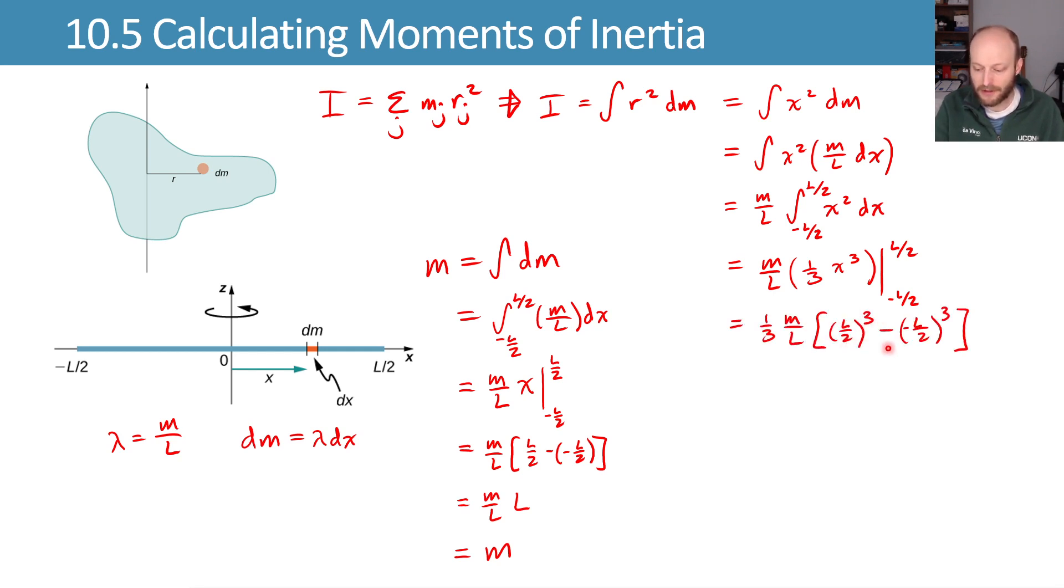We now have L over 2 cubed minus a negative L over 2 cubed, which ends up giving us one-third M over L times L cubed over 8 plus L cubed over 8 once the negatives cancel.